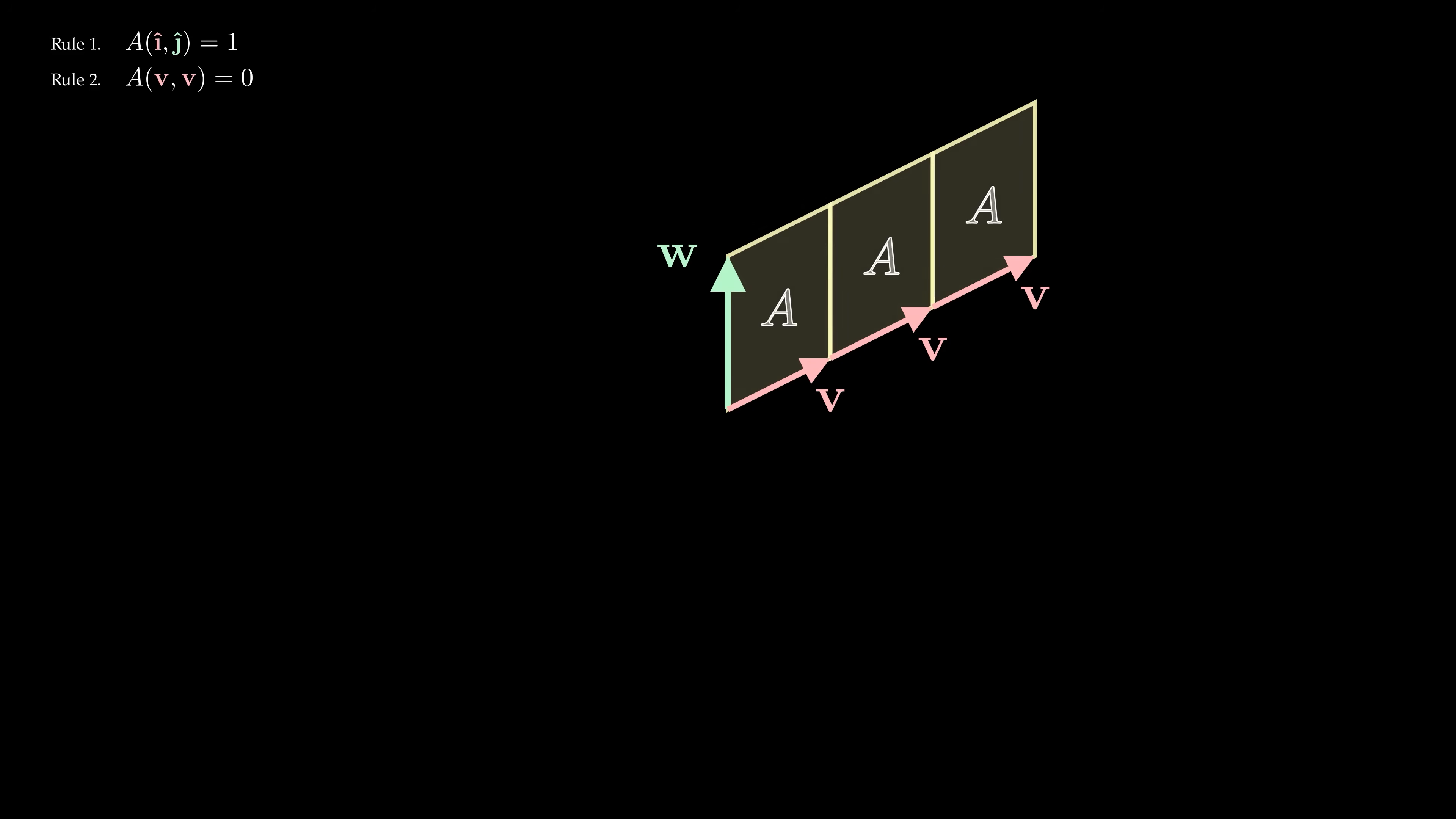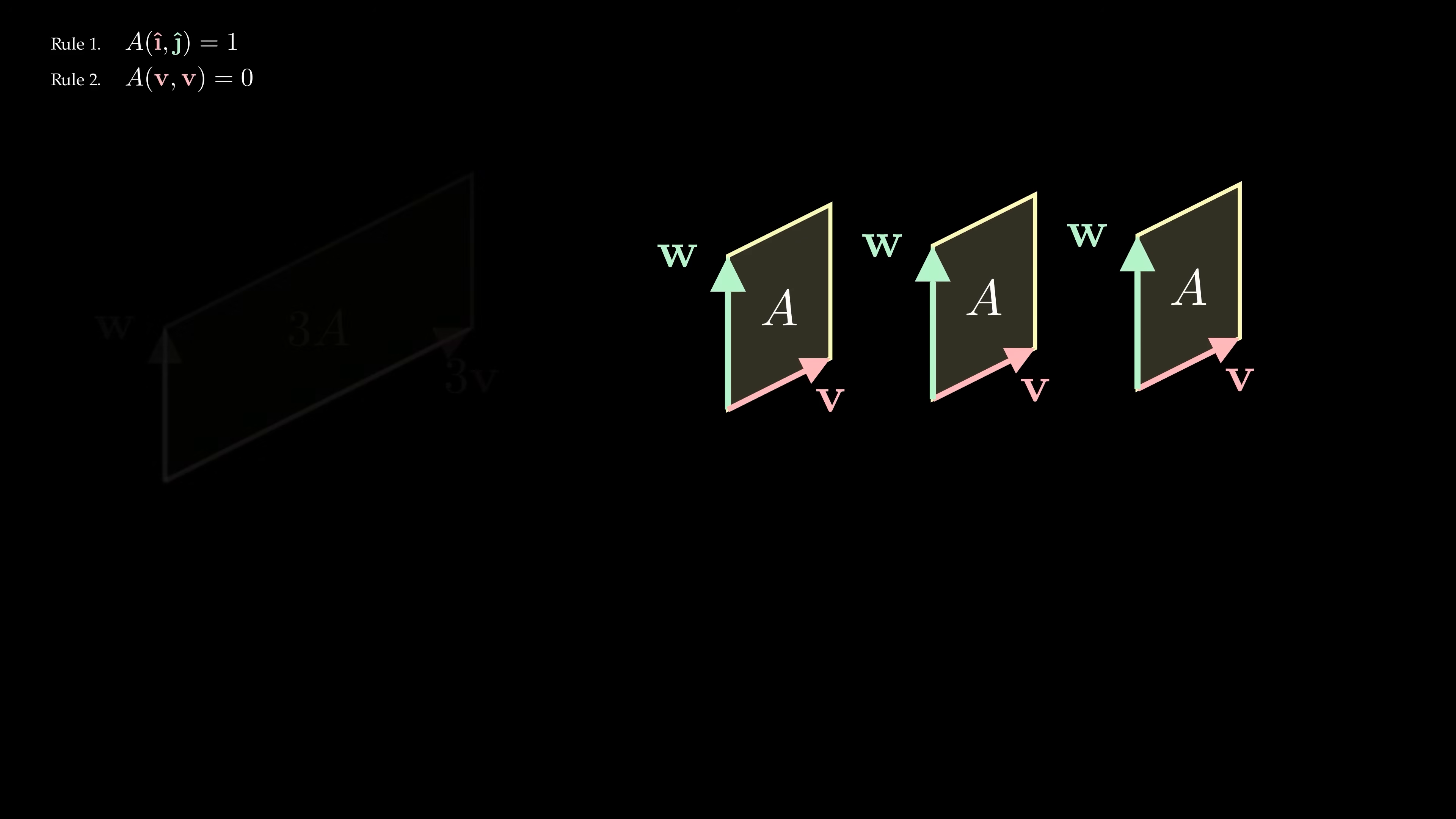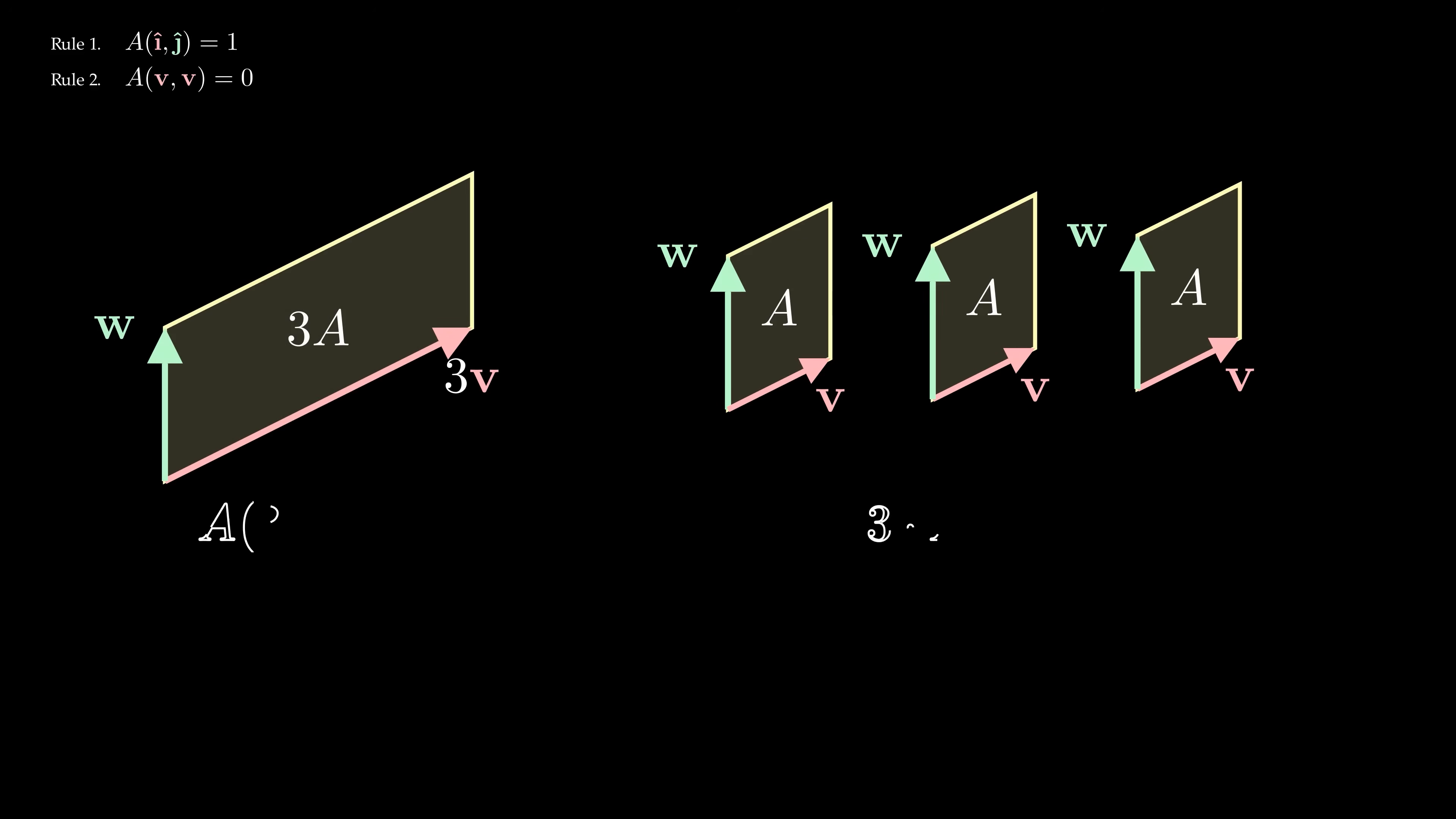And this makes sense since we can split the original parallelogram into three small parallelograms, each formed by v and w. In symbols, it looks like we can pull the constant factor 3 out of the area function A.